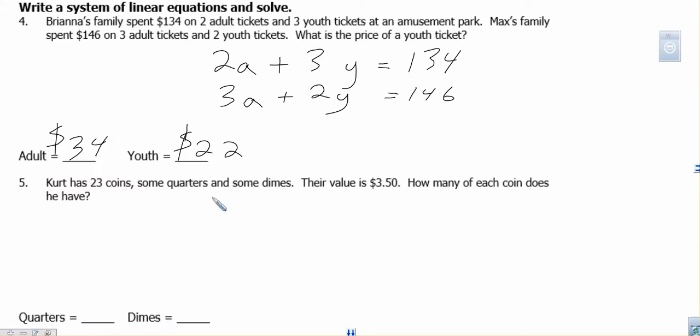Number five. Kurt has 23 coins, some quarters and some dimes. Their value is 350. How much of each coin does he have? So let's say Q and D. How much are dimes worth? 10 cents, right? So 0.10. Quarters are 25 cents apiece, for a total of 350. And then here we know that we have 23 coins, a total of them. So Q plus D equals 23. So let's go over to our calculator and work this one out.